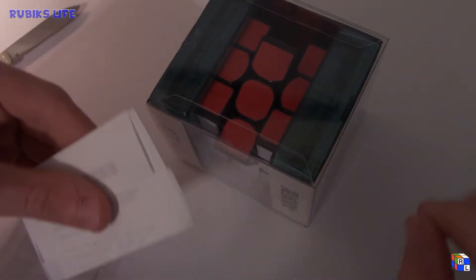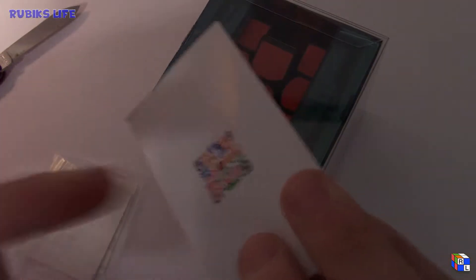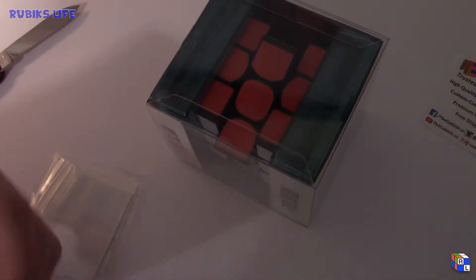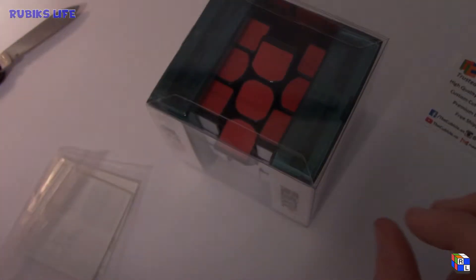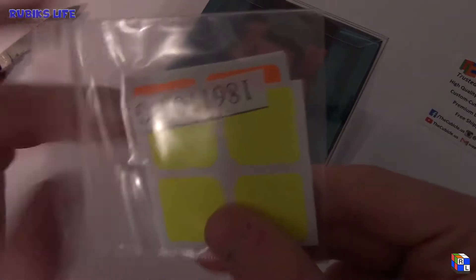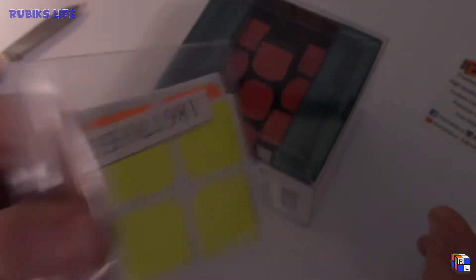Okay guys, so what we have here is the new Cubicle.us business card with the QR code on the back, the receipt, and some stickers for my Lingpo because I decided to resticker it with these shades.